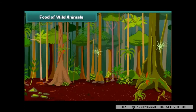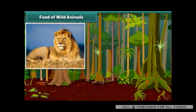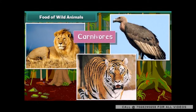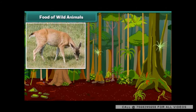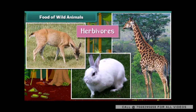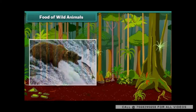Let us look at what wild animals eat for food. Lions, tigers, and vultures are carnivorous animals — they eat the flesh of other smaller animals. Deer, giraffe, and rabbits are herbivorous animals, as they eat only plants.